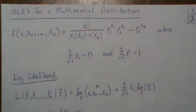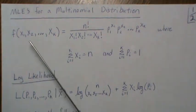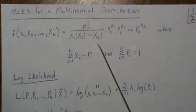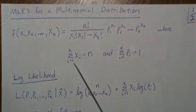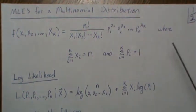Hello, in this video we're going to derive the maximum likelihood estimators for a multinomial distribution and let's jump right in. Here the probability mass function is given by this equation, where the restrictions are that the sum of the X's add to n and the sum of these probabilities add to 1.